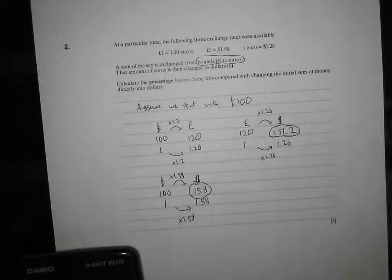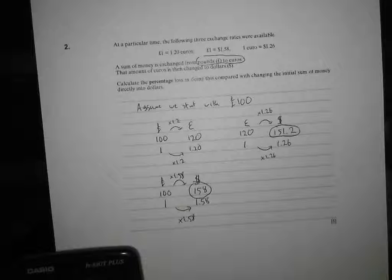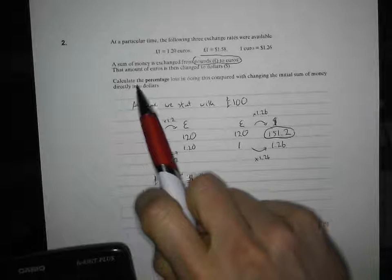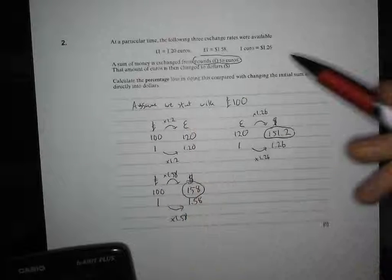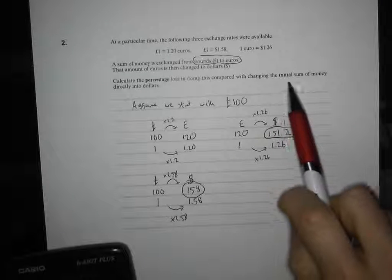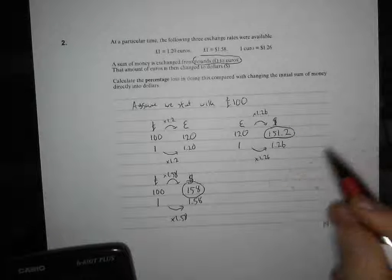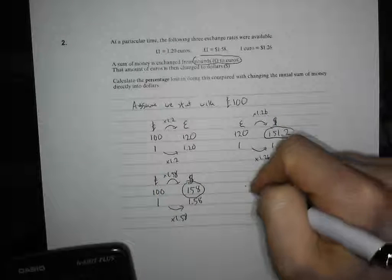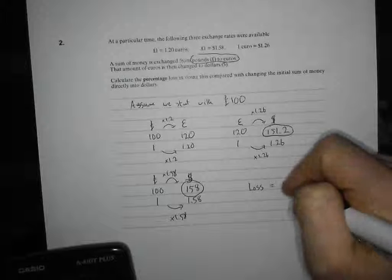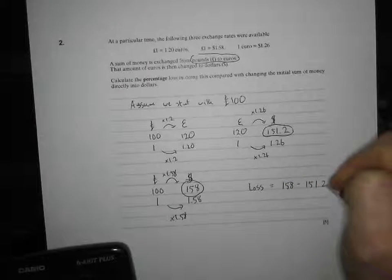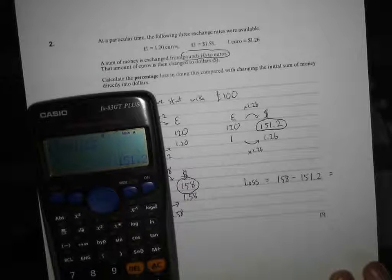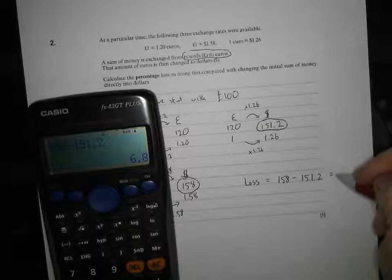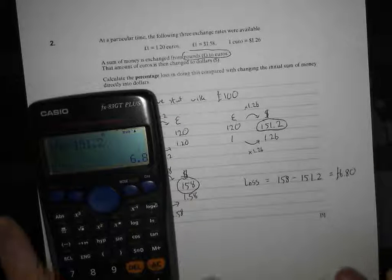So, one way we do it, we get $151.2. The other way, we get $158. Now, we're one step away from getting our final couple of marks. Calculate the percentage loss in doing it the other way, compared to if you just change the initial sum of money directly into dollars. So, how much do we actually lose by doing it that dodgy way around? So, our loss in actual money is going to be $158, take away $151.2. Let's just get the calculator on that one. $158, take away $151.2. Press equals, press my little SD, and that is going to be $6.8.